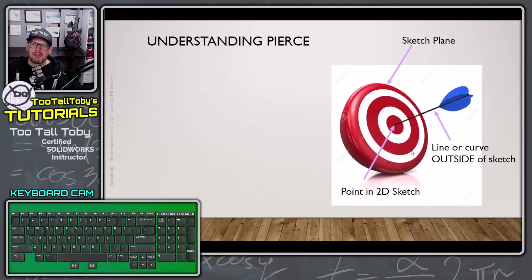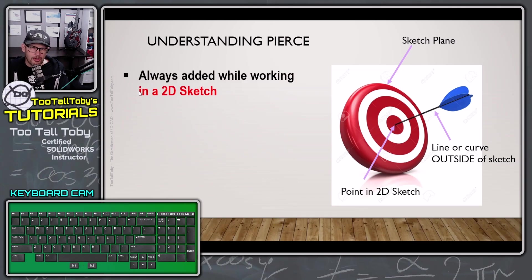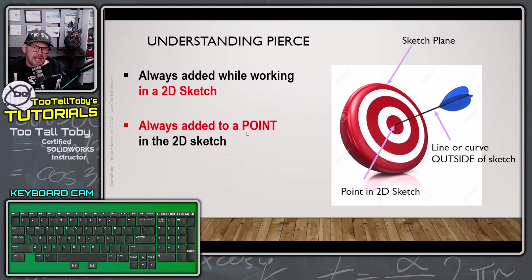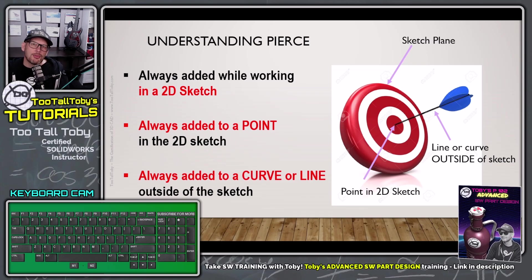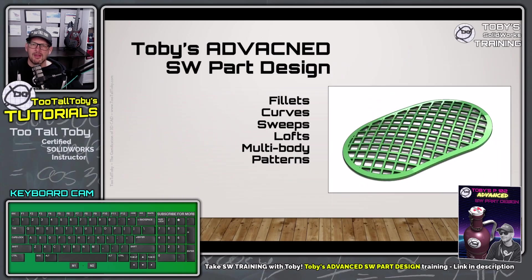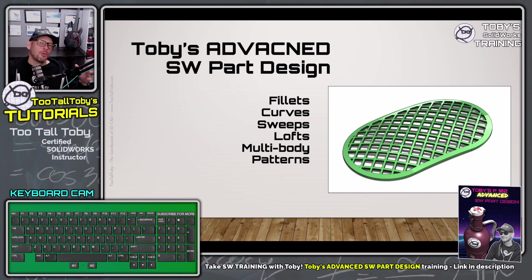Going back to the rules on my slide: the pierce constraint is always added when you're working in a 2D sketch. It's always added to a point in that 2D sketch, and it's always added to a curve or a line outside of that 2D sketch — one that is passing through or piercing the 2D sketch plane. Feel free to take a screen capture of this slide. I actually use it when teaching my advanced part design training class.